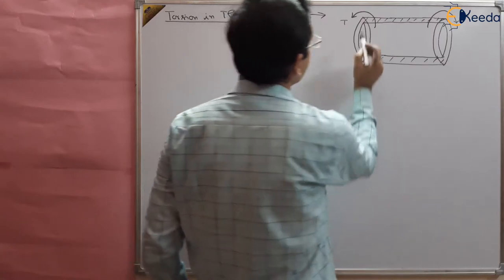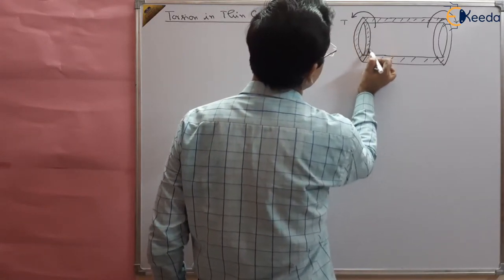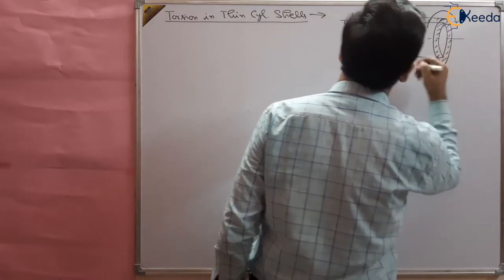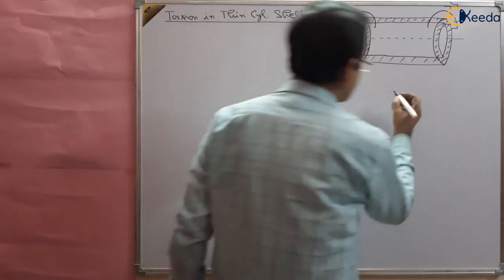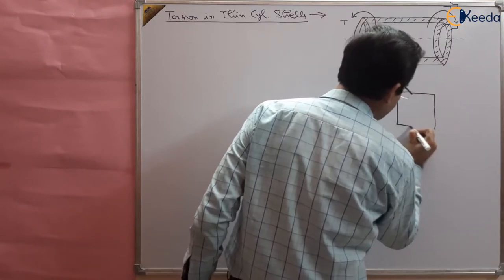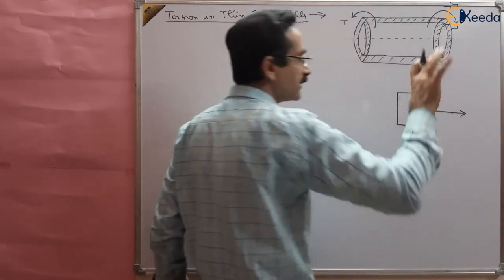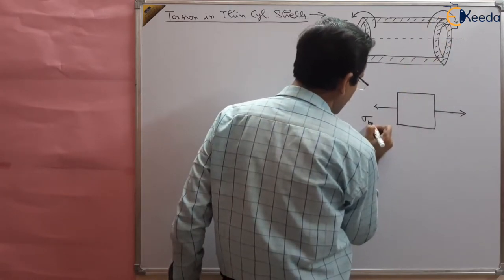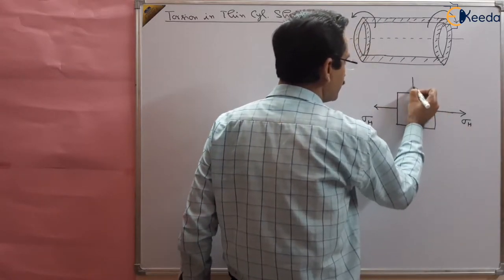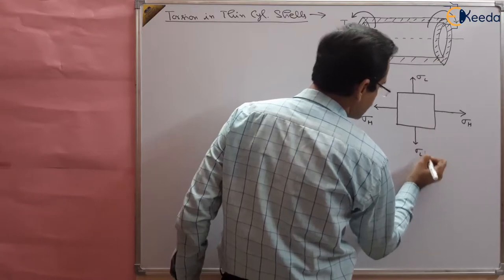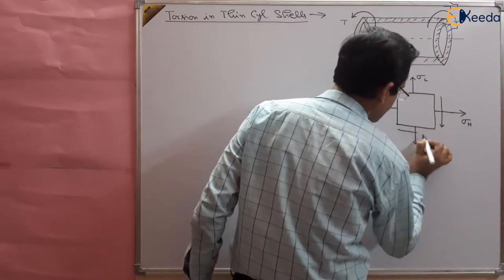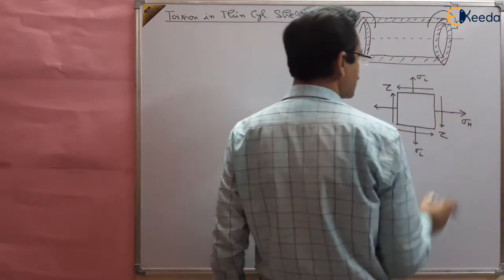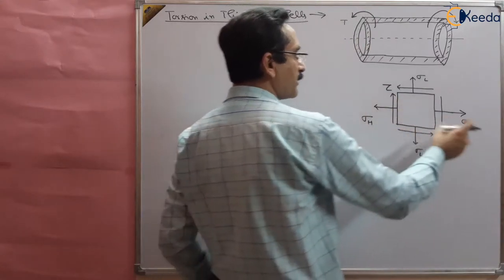When the torque is applied, apart from the hoop stresses and longitudinal stresses, there are now three stress conditions on the plane. Apart from tensile stresses, there are shear stresses also. You know that in the chapter of torsion we studied that when torque is applied the material gets sheared off. So apart from hoop stresses and tensile stresses, there will be some shear stress tau developed in the material, along with complementary shear stress.